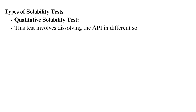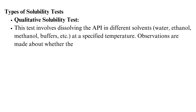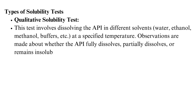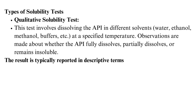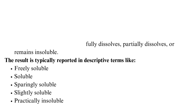Types of solubility tests: Qualitative solubility test — this involves dissolving the API in different solvents such as water, ethanol, methanol, and buffers at a specified temperature. Observations are made about whether the API fully dissolves, partially dissolves, or remains insoluble. The result is typically reported in descriptive terms like freely soluble, soluble, sparingly soluble, slightly soluble, or practically insoluble.